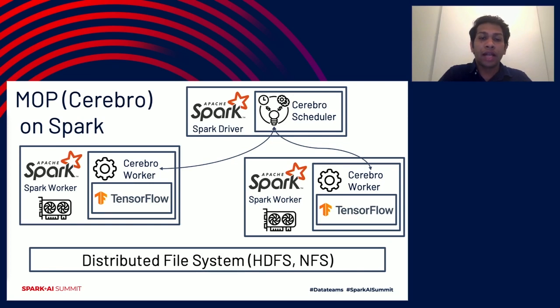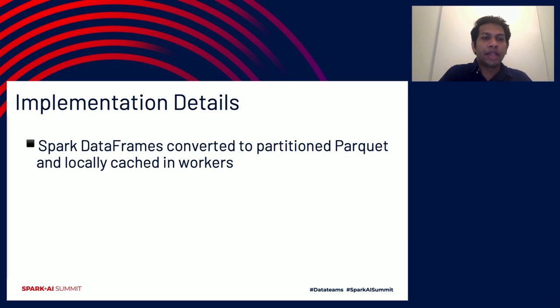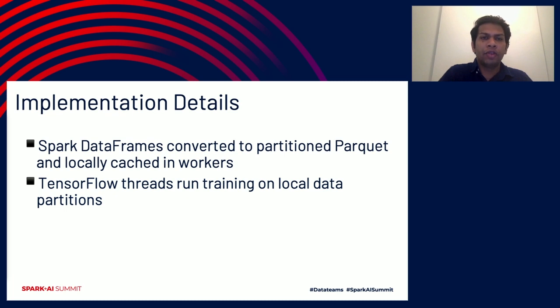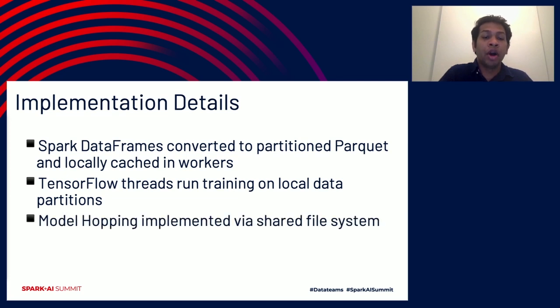Let's look into some of the implementation details of Cerebro on top of Apache Spark. We have implemented the Cerebro Scheduler and Cerebro Workers as a Spark job. The Cerebro Scheduler runs inside the Spark driver, and Cerebro Workers run inside Spark Workers. As the underlying deep-learning framework, we use TensorFlow. For the data storage layer, we support two different flavors: HDFS and NFS. Cerebro takes input data in the form of Spark dataframes and converts them to partitioned Parquet files and locally cached individual partitions inside workers using the Petastorm library. For model hopping, we use a shared file system — either HDFS or NFS.